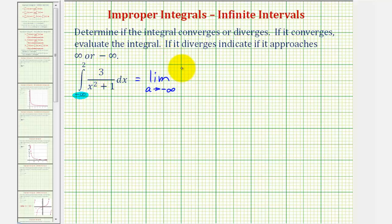Let's go ahead and factor out this three. So the integral will be from a to two. And the integrand would now just be one divided by the quantity x squared plus one.